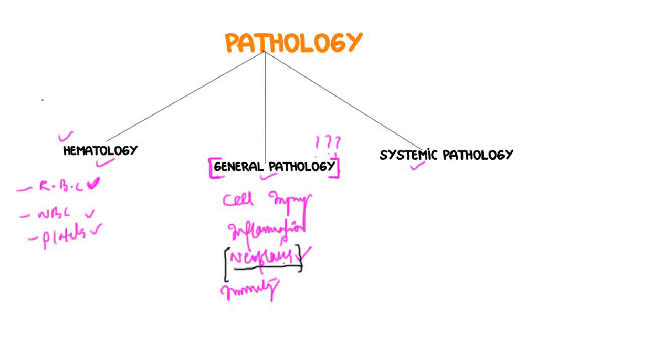Finally, we have got the systemic pathology. Systemic pathology is very interesting and you will literally feel like a doctor when you are reading systemic pathology. In systemic pathology we have various interesting topics like congestive heart failure, valvular heart diseases, rheumatic heart diseases, jaundice, COPD, inflammatory bowel disease, meningitis and all other stuff.